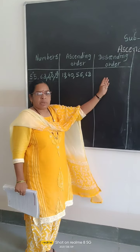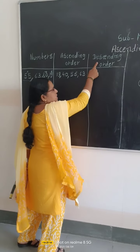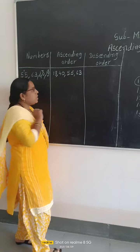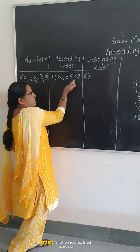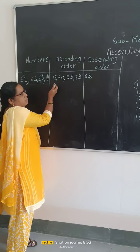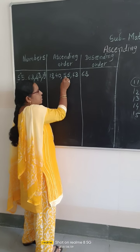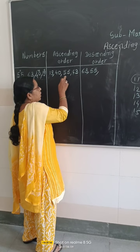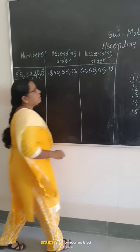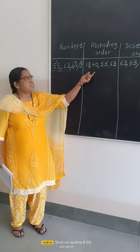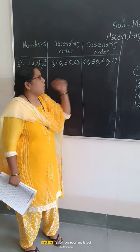Now, for arranging the numbers in descending order, you can arrange from this ascending order. Descending means the bigger number we should write first. From this, the bigger number is 63. If you write the ascending order in reverse, that order is known as descending order. So firstly write 63, then 55, then 43, and lastly 19. If you arrange ascending order first, then from that you can easily arrange all numbers in descending order.